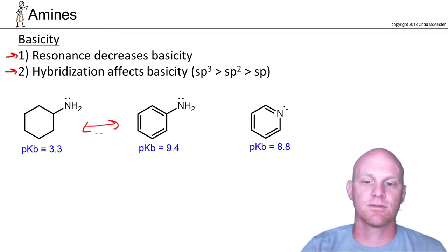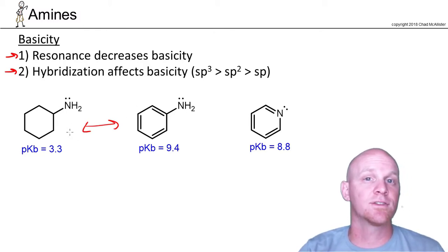If we compare these first two examples, that's a difference in resonance. This first one has no resonance stabilization. Recall that resonance stabilizes the base, making it a weaker base. So none in this case, and a fairly low pKb of 3.3, making it a fairly strong base.